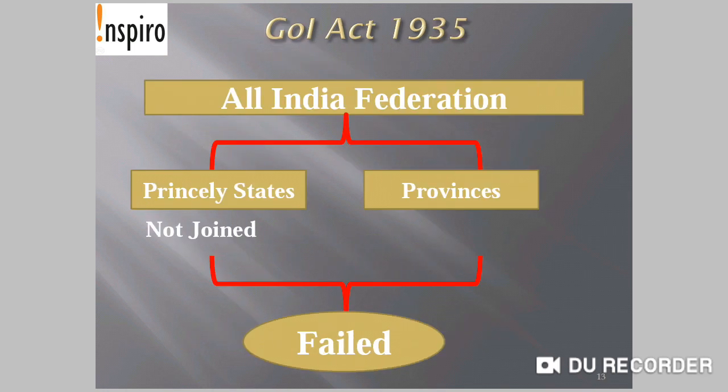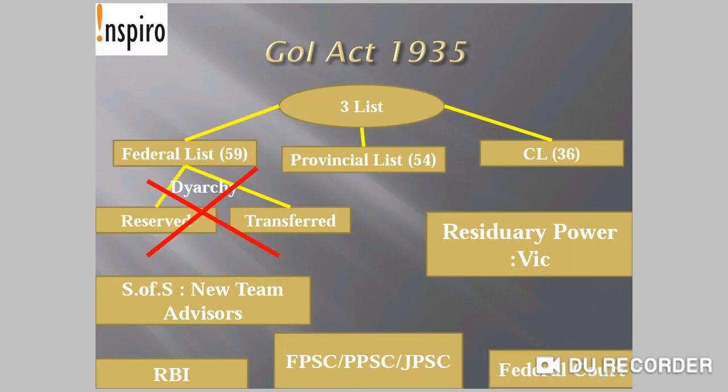Government of India Act 1935 is very important because it brought the idea of an All India Federation to the Indian center, representing both princely states and provinces. However, the princely states did not join, so the All India Federation provision was never realized. Three lists of subjects were constituted: the Federal List with 59 subjects, the Provincial List with 54 subjects, and the Concurrent List with 36 subjects.